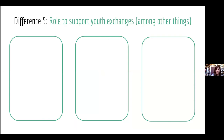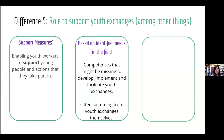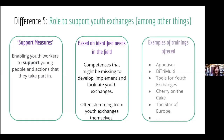Difference five: youth worker mobilities exist also to support youth exchanges. They are treated as support measures — enabling youth workers to support young people and develop competences to run and facilitate youth exchanges. They are based on identifying needs in the field, whether from organizations or European Commission intentions, to improve quality of youth exchanges. Often they happen as a result of youth exchanges. Examples include Appetizer, B3 Multi-Tools for Youth Exchanges, Cherry on the Cake, and Star of Europe, offered at European level by national agencies and SALTOs.